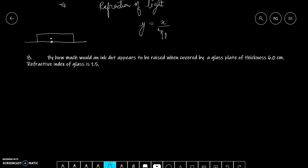Question 8 says, by how much would an ink dot appears to be raised when covered with a glass plate of thickness 6 cm? Refractive index of the glass is 1.5. Question ke according humain x ki value de rakhe, which is the real depth, x is equal to 6.0 cm, and we are given refractive index of glass with respect to air which is equal to 1.5. Now we have already derived this formula in the previous videos that apparent depth y is equal to real depth upon refractive index. Ismein value rakhenge 6.0 divided by 1.5.